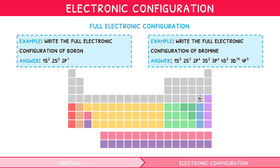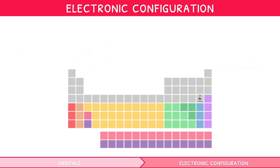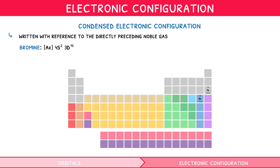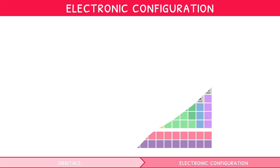As you can see, for longer electronic configurations this can get quite laborious. So a condensed electronic configuration can be written with reference to the directly preceding noble gas. For example, bromine would instead be written as [Ar] 4s², 3d¹⁰, 4p⁵.